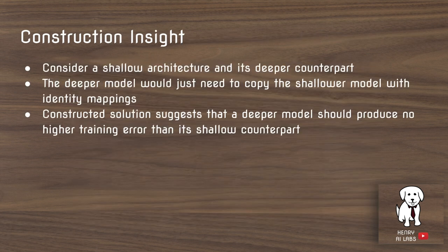But they offer this construction insight: if you consider a shallow architecture and its deeper counterpart with more layers, theoretically all the deeper model would need to do is copy the output from the shallow model with identity mappings. So the construction solution suggests that a deeper model should produce no higher error than the shallow counterpart.